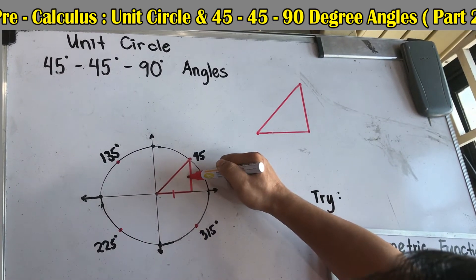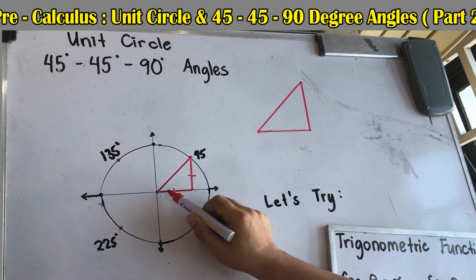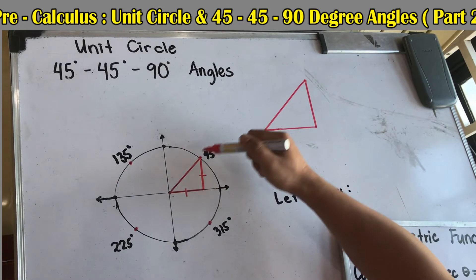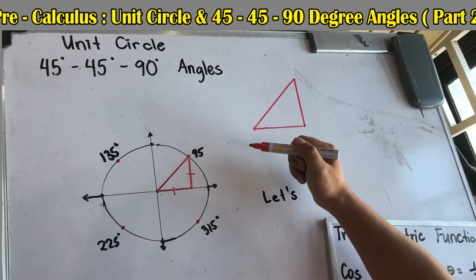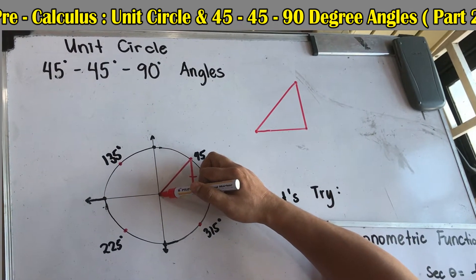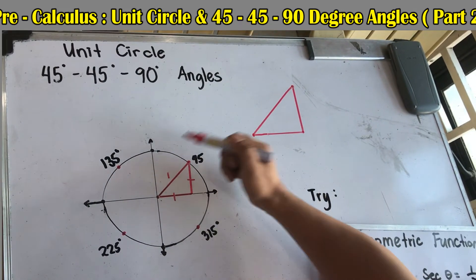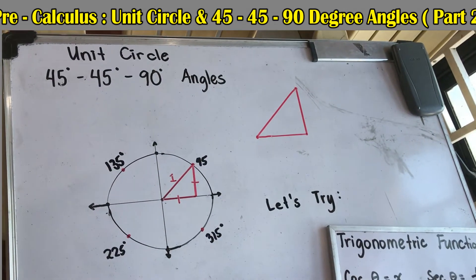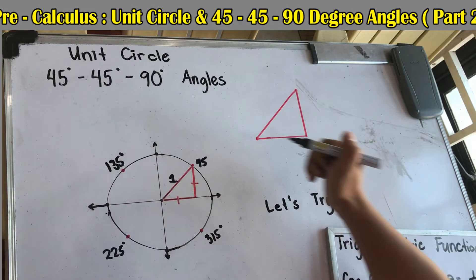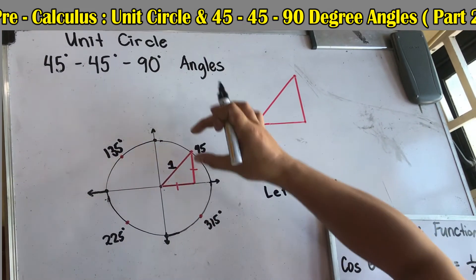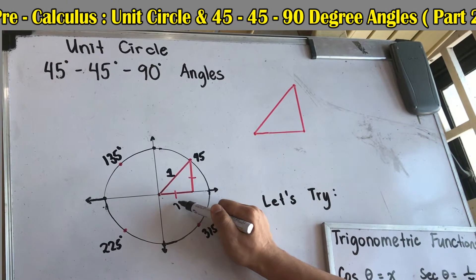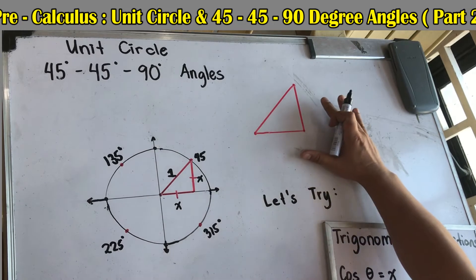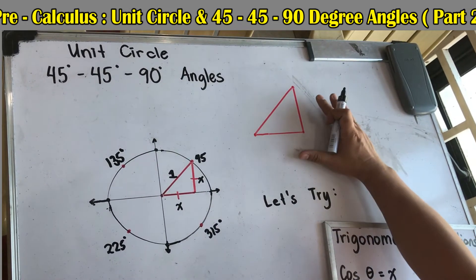In the 45-45-90 degree triangle, the two legs are congruent — this side is equal to this side. In the unit circle, the radius (our hypotenuse from the origin to the point) is equal to one. Since the two sides are equal, we'll call each side x.